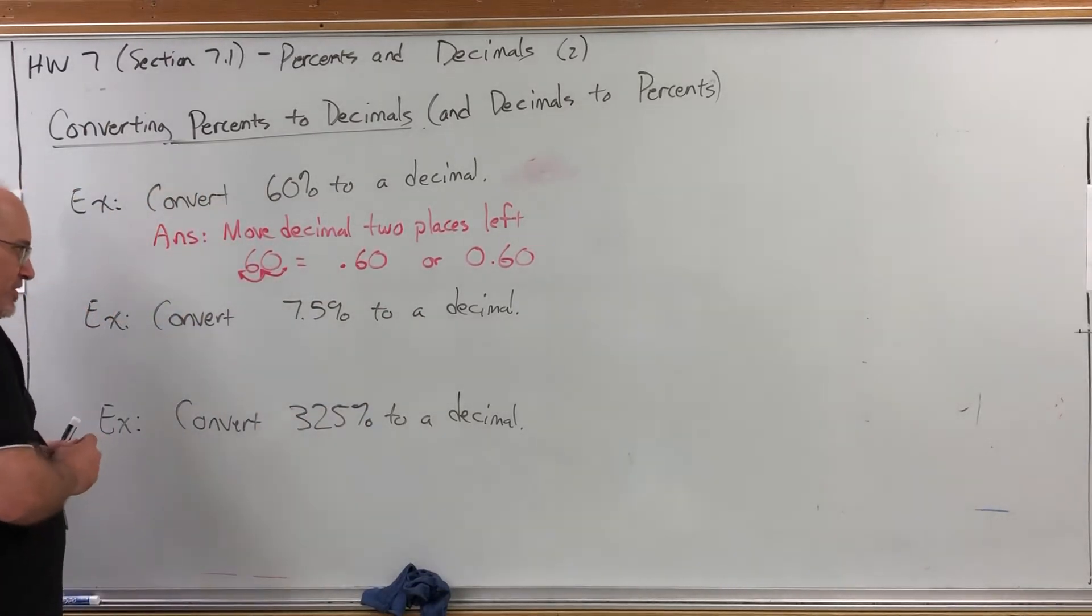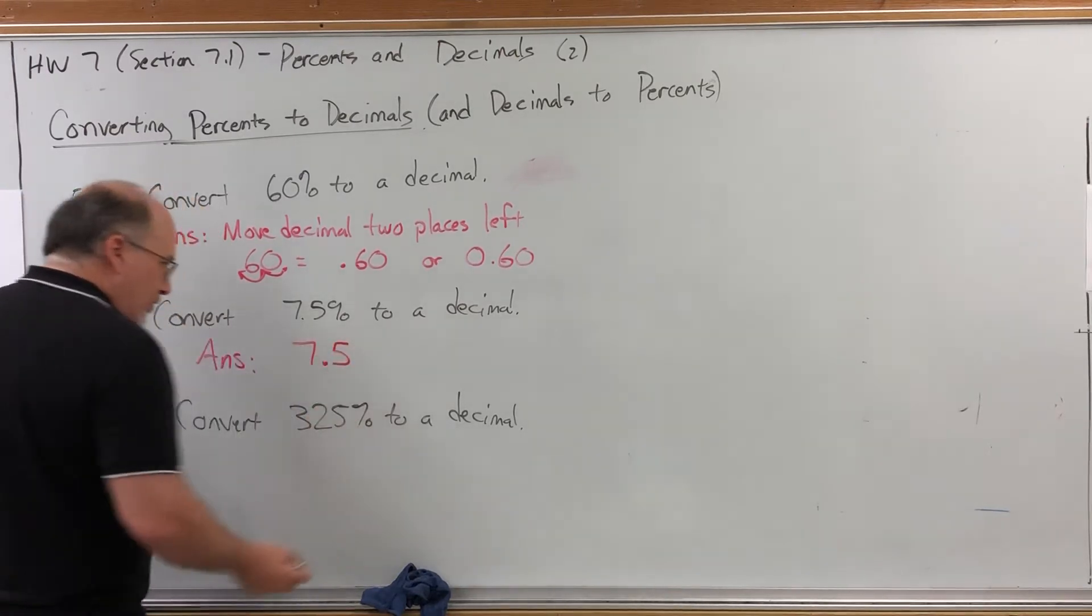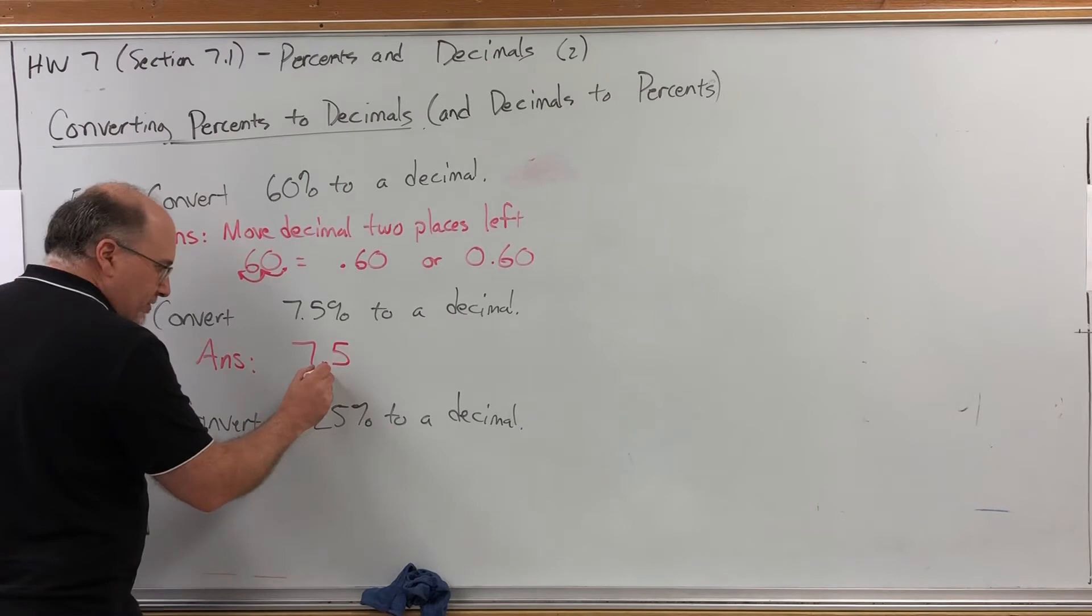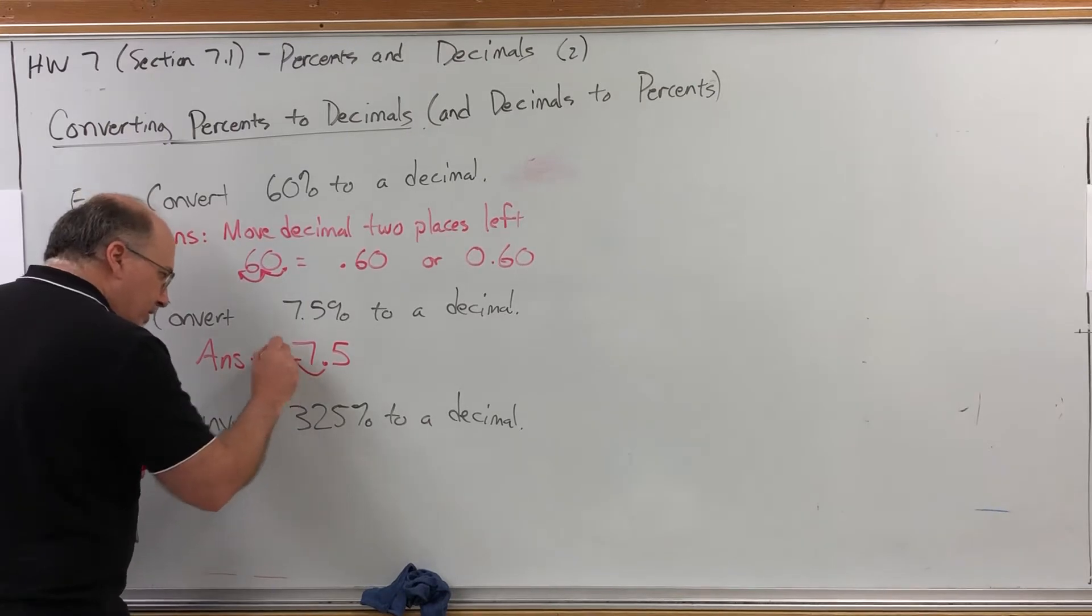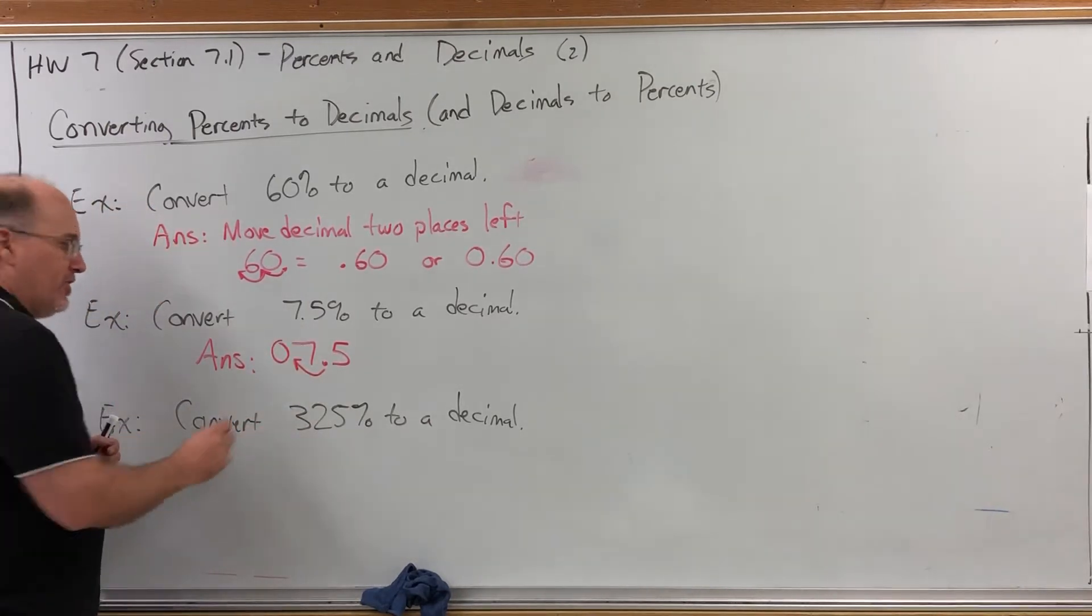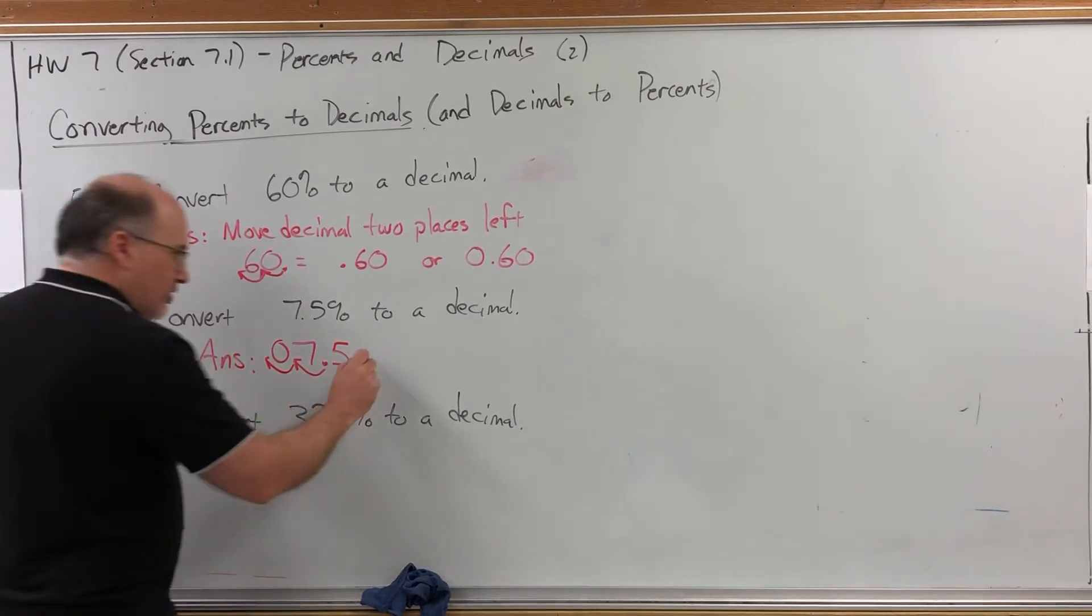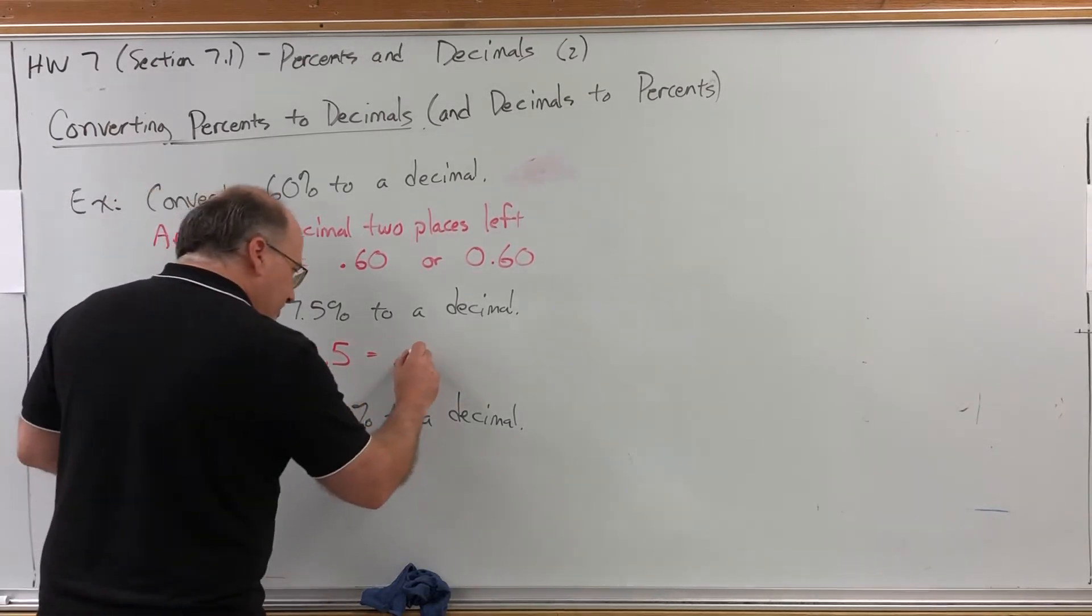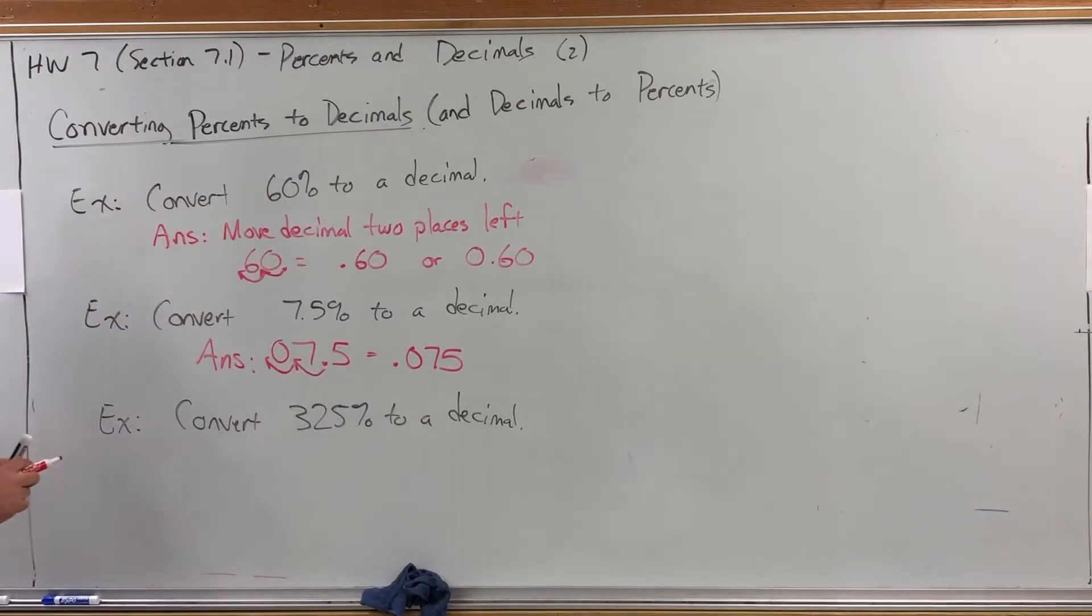Same thing for 7.5%. Drop the percent and move the decimal two places to the left. Now, if there are not two digits to the left of the decimal already, you need to insert a zero at the far left of the number so that you can move one more decimal place. So 0.075 would be 7.5% as a decimal.